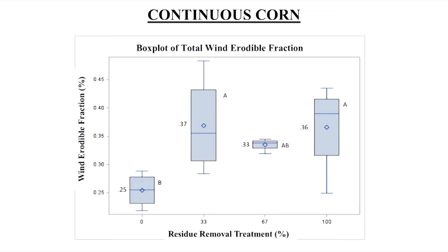What we found was that the 100 percent removal had about 40 percent of the aggregates of the size that can be eroded by wind, about 0.84 millimeters — about the size of a sand grain or the opening in a regular window screen. Anything that size or smaller can move if it's not cemented together. The lowest wind erodible fraction was found in the zero percent removal, where all the residue was left on the surface, and that was 35 percent of the aggregates able to blow away.